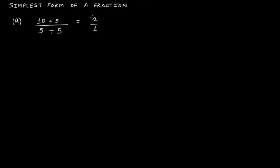Is there any other common factor of 2 and 1? Common factor means a number which can divide both numbers. The answer is no — there is no other common factor of 2 and 1 other than 1 itself. Therefore, 2 by 1 is the simplest form of 10 by 5.